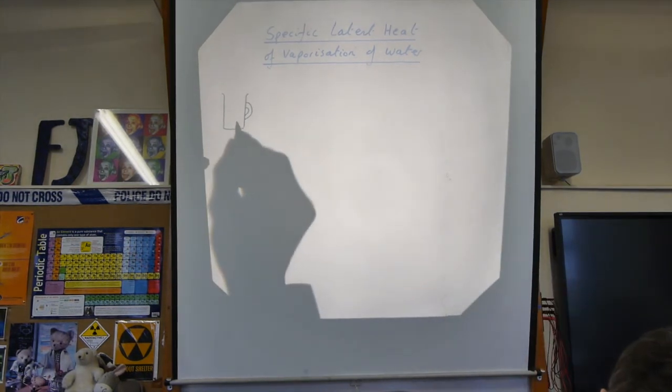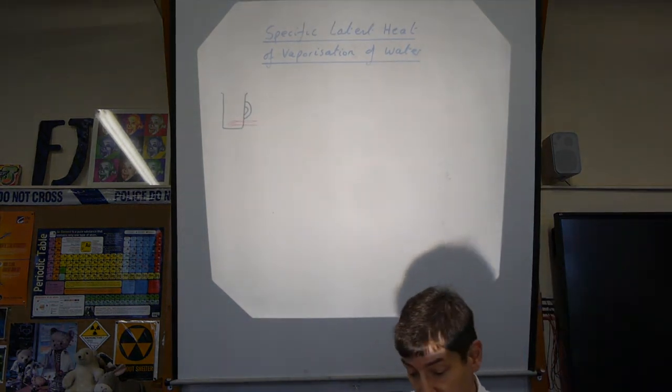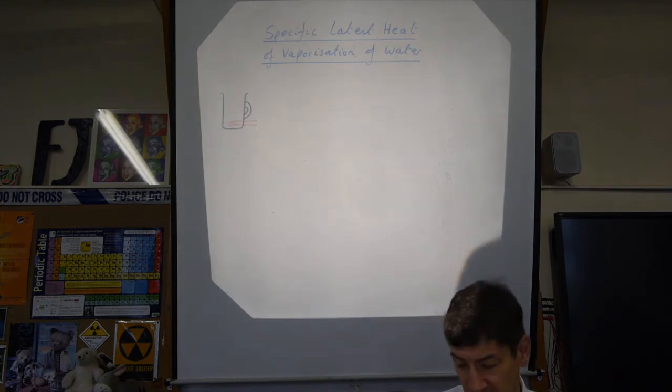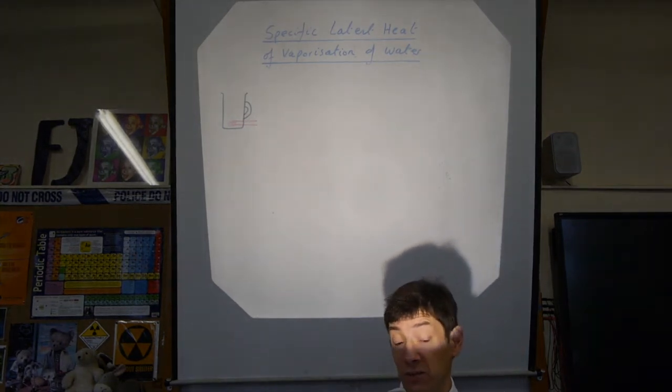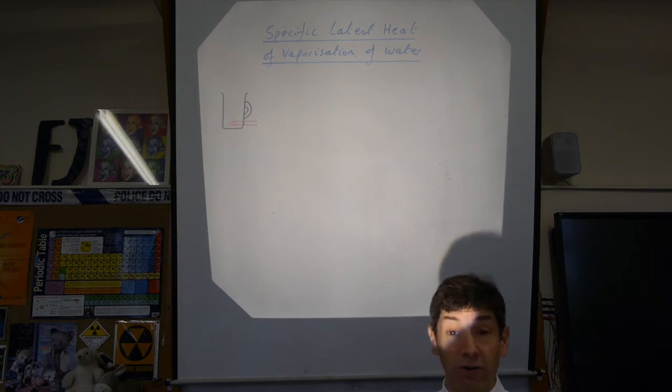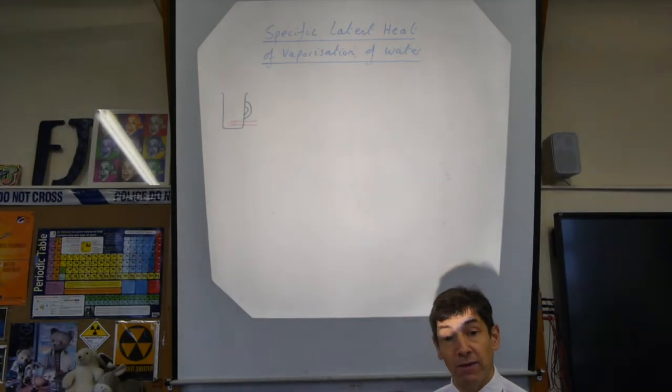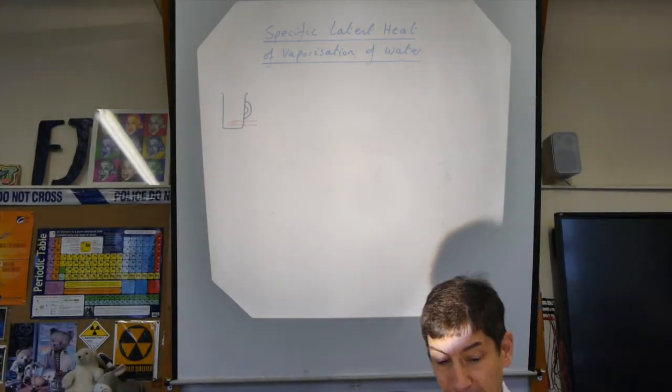In the bottom of that kettle will be an electrical heater. Theoretically, though it assumes DC, we can use RMS values with AC. If we measure the potential difference and the current, we've got the voltage and the amp, so we multiply those two together to get the power.